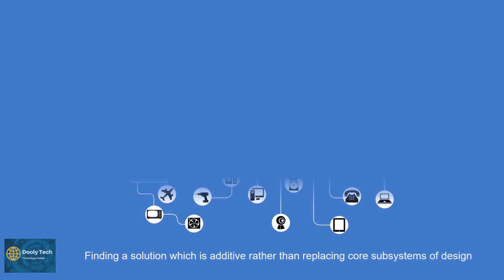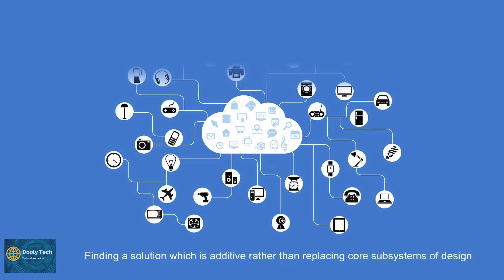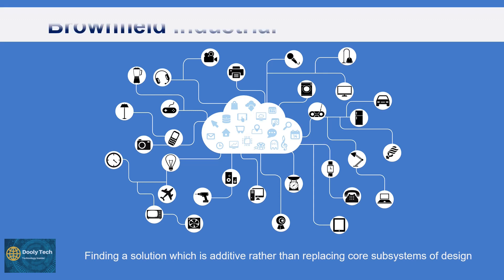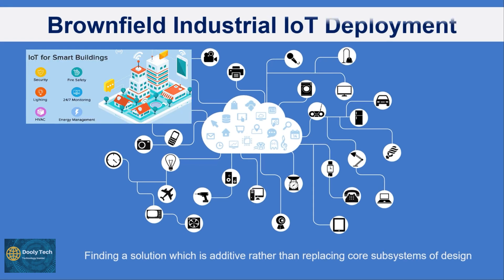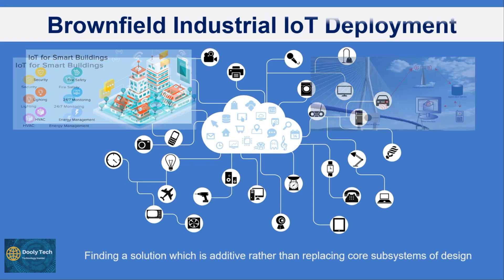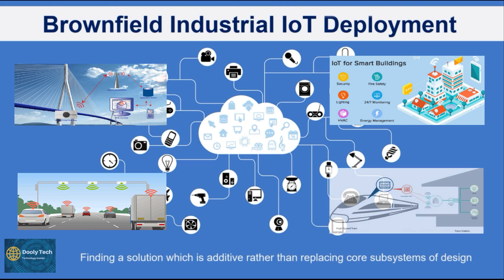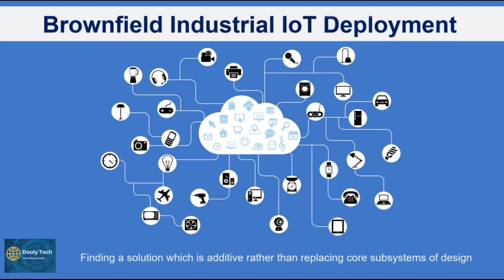Hi everybody. Today we are going to discuss about Brownfield IoT deployment. Brownfield deployment refers to any form of software that's created on top of the legacy systems that are already in use. Brownfield is especially important in industrial IoT such as smart buildings, bridges and roads, railways, and all the infrastructure that has been around for decades and will continue to be around for decades more.